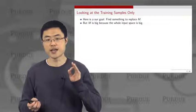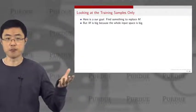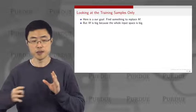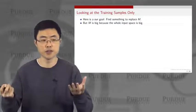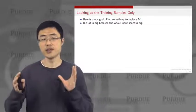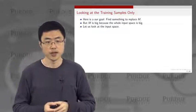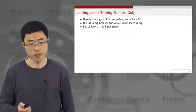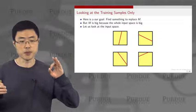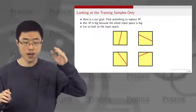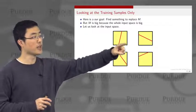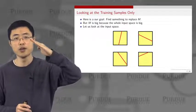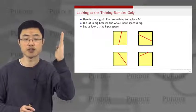Our goal is to find something to replace M, because M is a very, very big number. M is big because the whole space of all possible hypotheses is extremely big. Even in a 2D case, you have infinitely many hypotheses to choose from. We can also look at the input space instead of the entire space. In the input space, you have all these possible hypotheses — even if you just tilt a line by a small angle, you have a different hypothesis. This is a very, very big set of hypotheses.